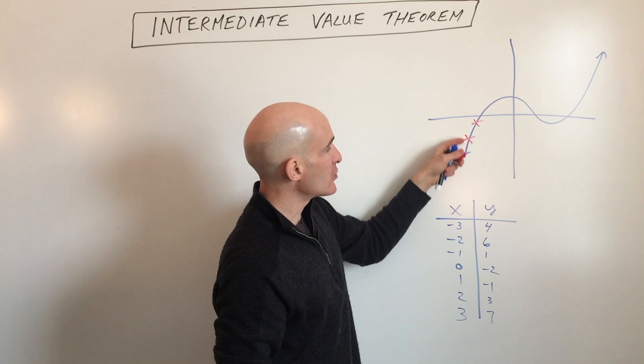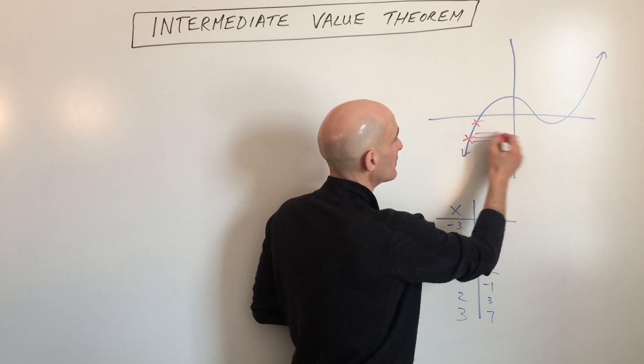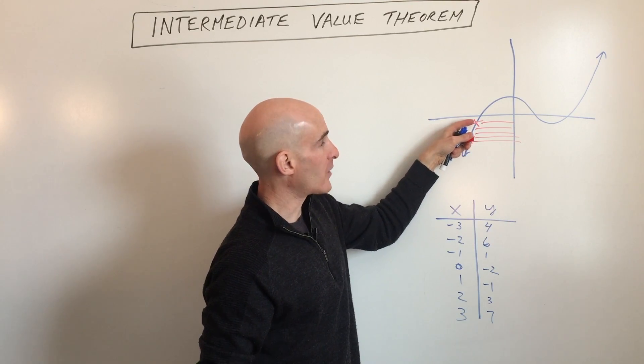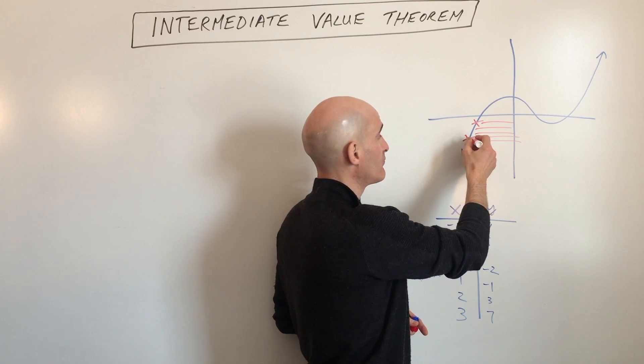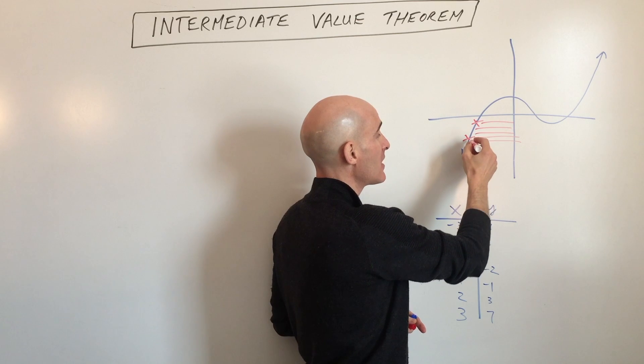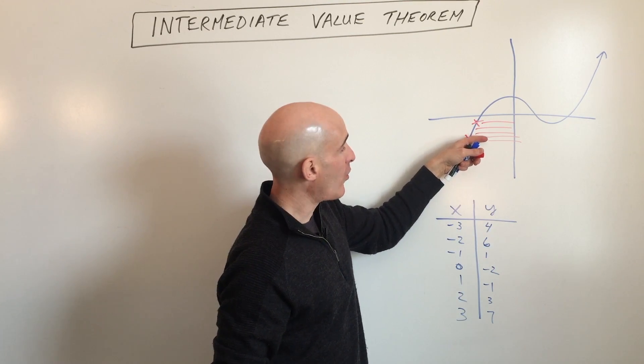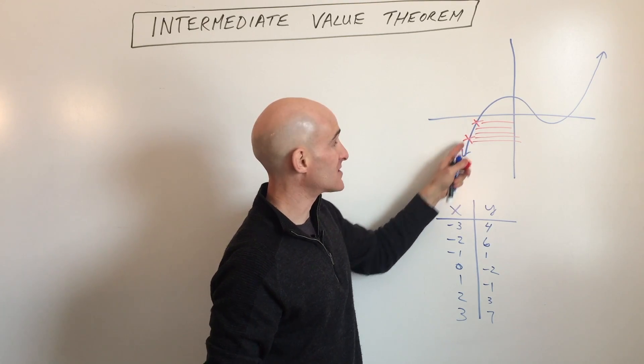You're going to hit all the Y values in between this Y coordinate and that Y coordinate, because it's not like all of a sudden you're going to just pick up your pen and then move it to here. If it's continuous, you're going to hit all the Y values that are in between the Y coordinate at this point and the Y coordinate at this point.